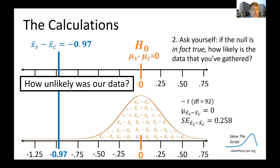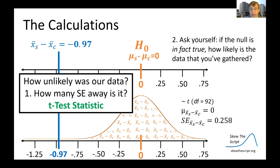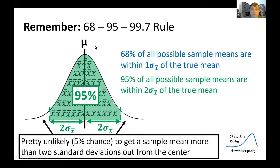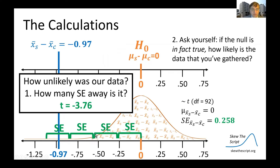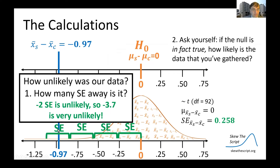We must statistically ask how unlikely our data was — how many standard errors away is it from the null? That's what the t-statistic assesses. Recall the 68-95-99.7 rule: 68% of all possible sample means are within one standard error of the true mean, and 95% are within two standard errors. Our data is a distance of 0.97 from the null, with a standard error of 0.258, meaning we are 3.76 standard errors away — way beyond where 95% of all values lie.